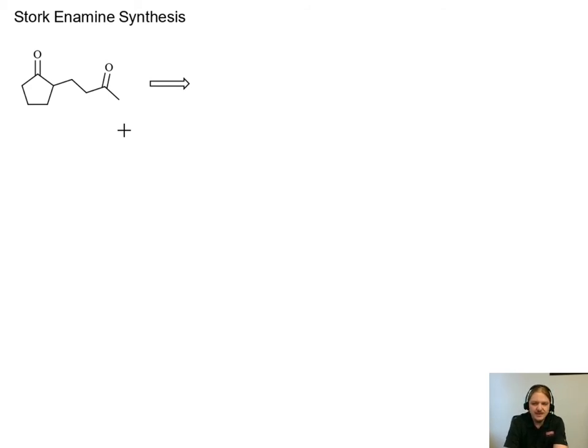This reaction sequence involves a lot of carbonyl chemistry, including the formation of enamines. So if you're not sure what an enamine is, you should probably go find my video on that topic. And it involves Michael addition, so if you're not sure what that is, you should go find my video on that topic. But if you're familiar with those two things, let's forge right ahead.